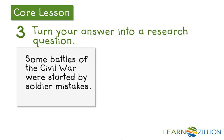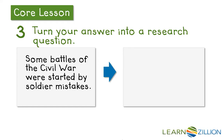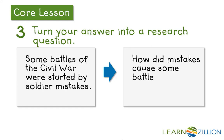I've got that focus, and now I just need to turn my answer into a research question. Some battles of the Civil War were started by soldier mistakes — that means I don't just want to talk about one battle. I want to talk about the attack on Fort Sumter and the battle at Ball's Bluff, and maybe if I read more about different battles, I can find how those were caused by soldier mistakes. So maybe something like: How did mistakes cause some battles of the Civil War to begin? I think I've got my research question.